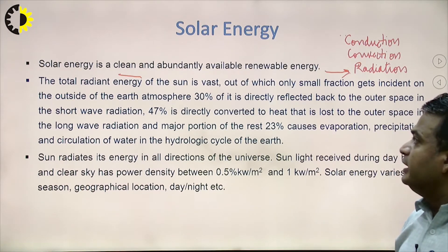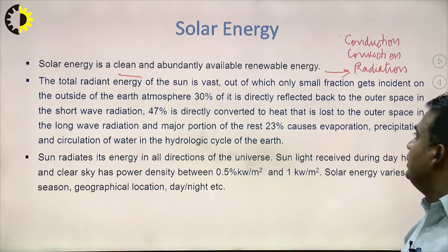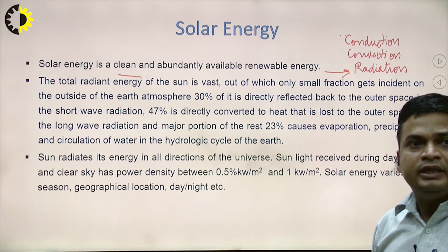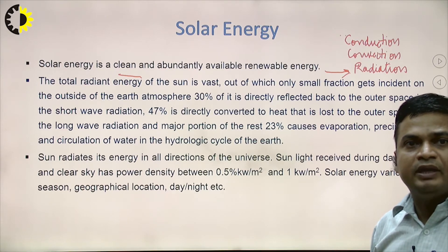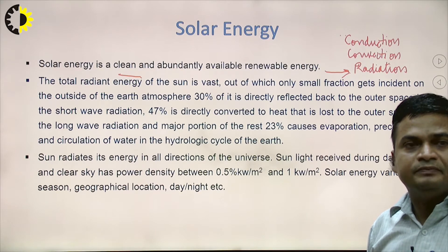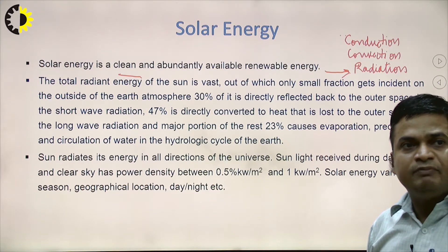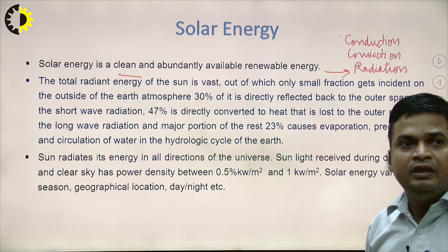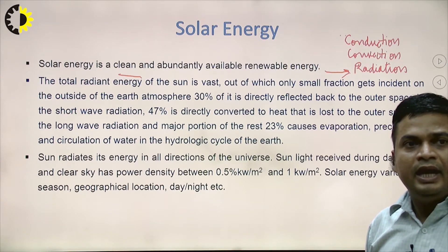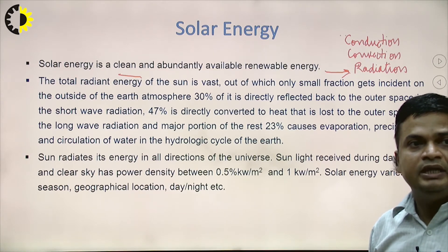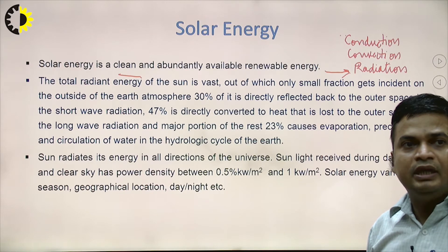The total radiant energy of the sun is vast, but only a small fraction gets incident on the outside of the earth's atmosphere. Of that, 30 percent is directly reflected back to outer space as short-wave radiation. 47 percent is directly converted to heat and lost to outer space as long-wave radiation. The major portion of the remaining 23 percent causes evaporation, precipitation, and circulation of water in the hydrologic cycle of the earth.